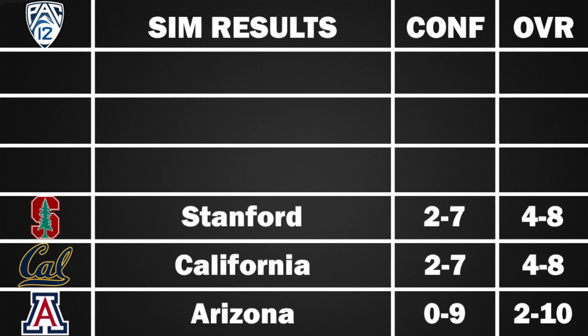Ahead of Cal is Stanford, also 4-8, 2-7 in conference — a little higher than I have them in real life. Stanford beats Hawaii, Sacramento State, Arizona, and Cal, but loses to USC, Oregon, Colorado, UCLA, Washington, Washington State, Oregon State, and Notre Dame.